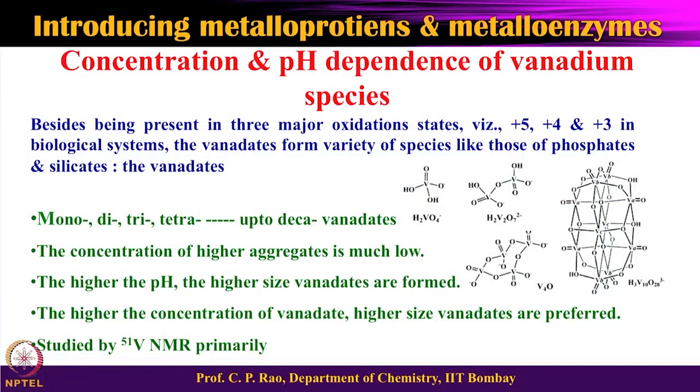It is important to know the nature of vanadium species in solution. The oligomeric forms depend on vanadium concentration and pH. Most vanadium species are found in the +5 oxidation state as vanadates — analogous to phosphates, silicates, and molybdates. Vanadates range from mono to deca forms. Higher-pH conditions favor larger vanadate species, and higher vanadium concentration favors higher-order vanadates. These +5 vanadates are best studied by 51V NMR since V5+ is a d0 system with no unpaired electrons.